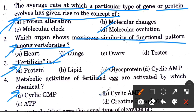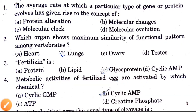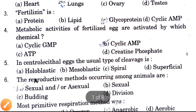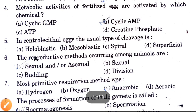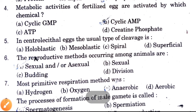Next question: Metabolic activities of fertilized egg are activated by which chemical? In humans, which chemical activates the metabolic activities of the fertilized egg? Options are cyclic GMP, cyclic AMP, ATP, and creatine phosphate. The answer is cyclic AMP.